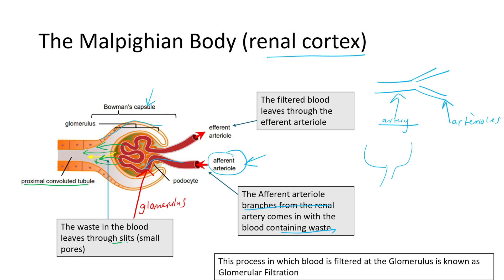The waste leaves through slits, which are small pores or holes at the Bowman's capsule. When the blood reaches this point, filtration happens: waste products move from the blood in the glomerulus through these slits into the proximal convoluted tubule. The filtered blood then leaves through the efferent arteriole. The efferent arteriole carries blood that has been filtered — it is clean because the waste products have already diffused out at the glomerulus.